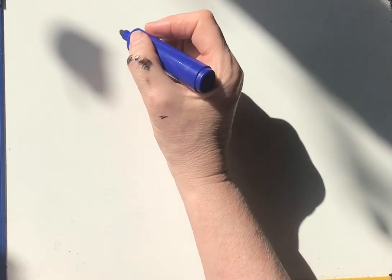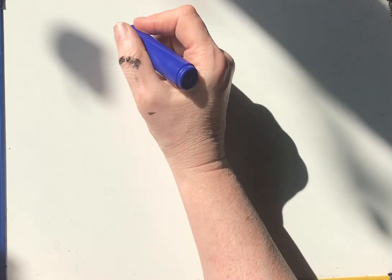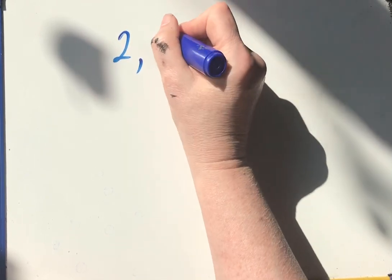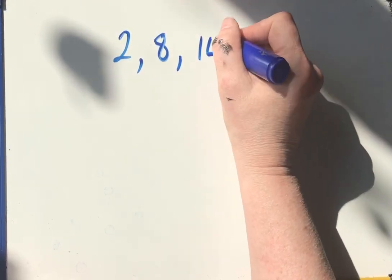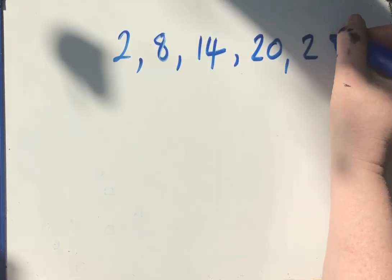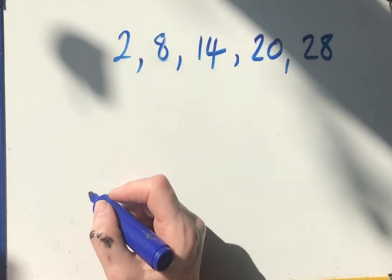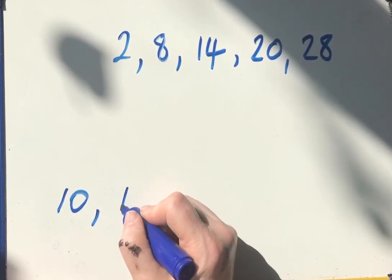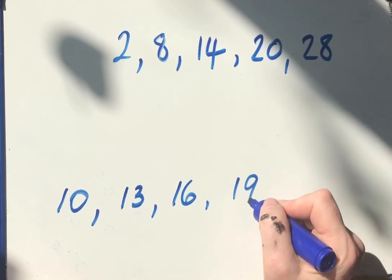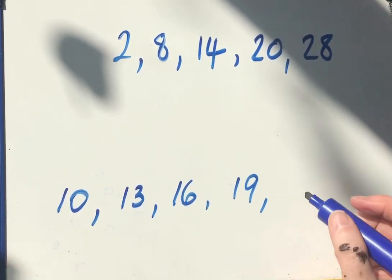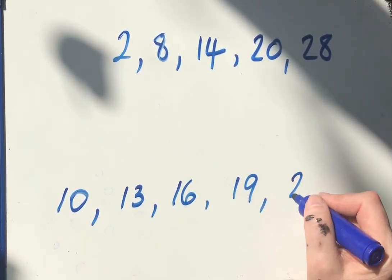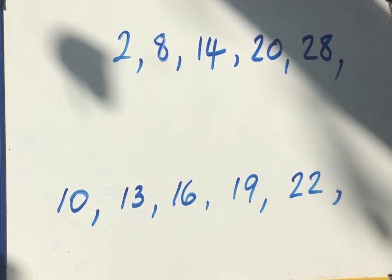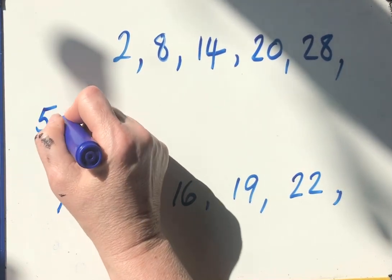So here's a couple for you to do. The first one is 2, 8, 14, 20, 28, and the second one is 10, 13, 16, 19, 22. And then I'm obviously adding on each time.